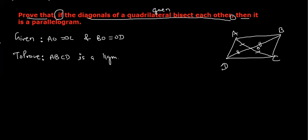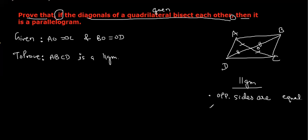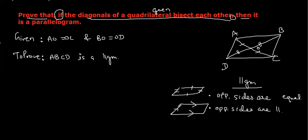Try to think: what is a parallelogram? If you know the properties of a parallelogram — opposite sides are equal, or opposite sides are parallel — either you prove this side equal to this and this side equal to this, or prove that this is parallel to this and this is parallel to this. Either you prove one pair of opposite sides are parallel and equal.